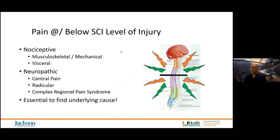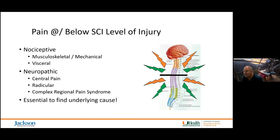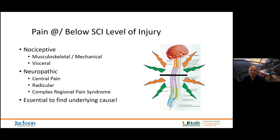Pain is problematic for any of us. Nociceptive pain from overactivity, sprains, or strains can typically be managed with NSAIDs, relative rest, ice, compression, and elevation. However, nociceptive pain below the level of injury for someone with spinal cord injury isn't perceived as pain — instead it manifests as autonomic dysreflexia. So if they are having significant nociceptive input, they're at high risk for autonomic dysreflexia and increased spasticity.